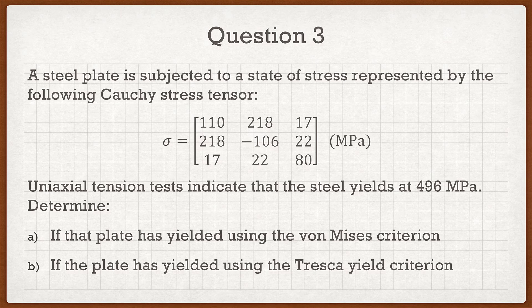Just like the other two questions, we have a nice stress tensor — it's symmetric, and again we only have sigma_22 as negative. The question wants us to do four different things: the first two are related and the second two are related. Part a is a uniaxial tension test indicating the steel yields at 496 MPa — we want to determine if the plate yields using the von Mises yield criterion; part b uses the Tresca yield criterion. These are related and quite simple: all we need to do is find the von Mises stress and the Tresca stress and compare to that yield value.